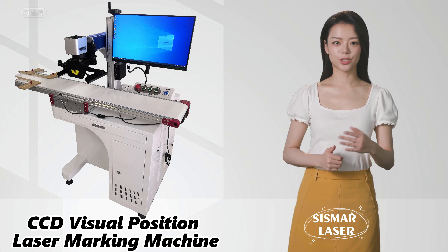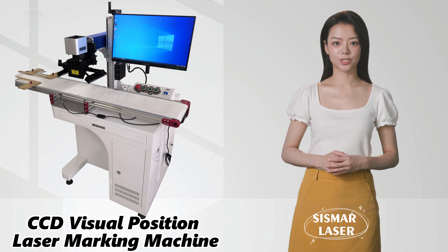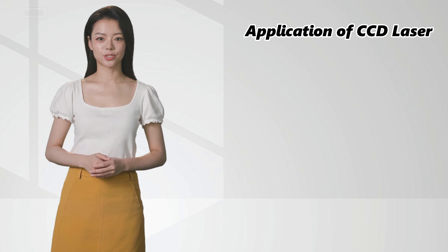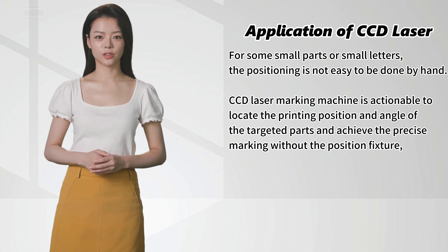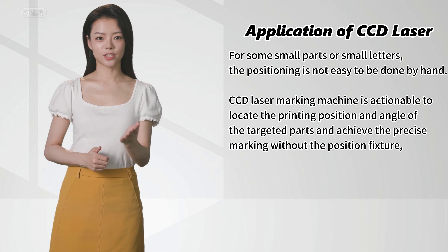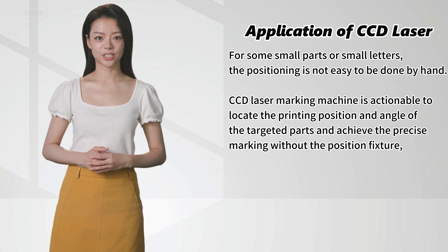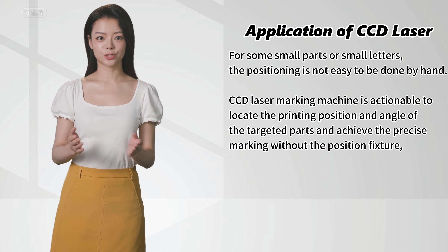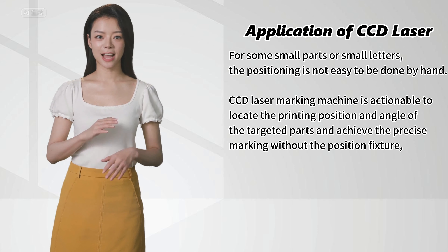CCD Visual Position Laser Marking Machine. For some small parts or small letters, the positioning is not easy to be done by hand. CCD Laser Marking Machine is able to locate the printing position and angle of the targeted parts and achieve precise marking without a position fixture.